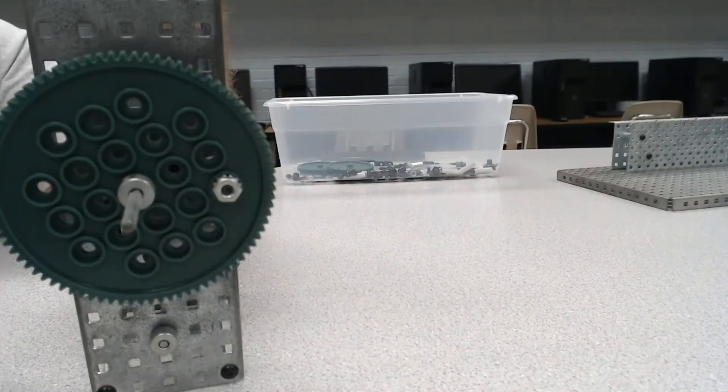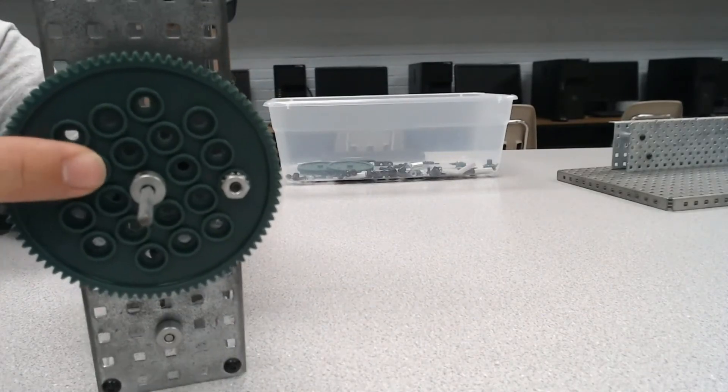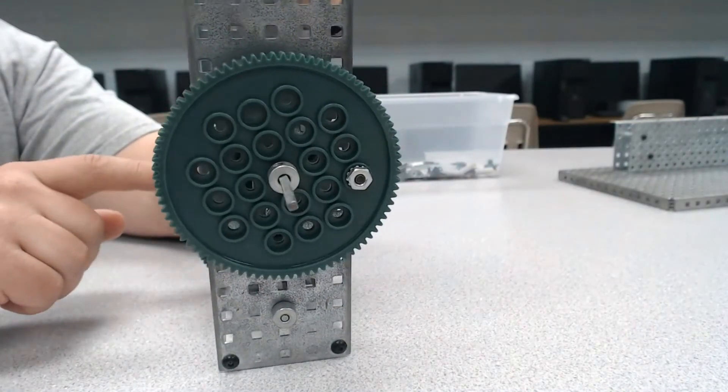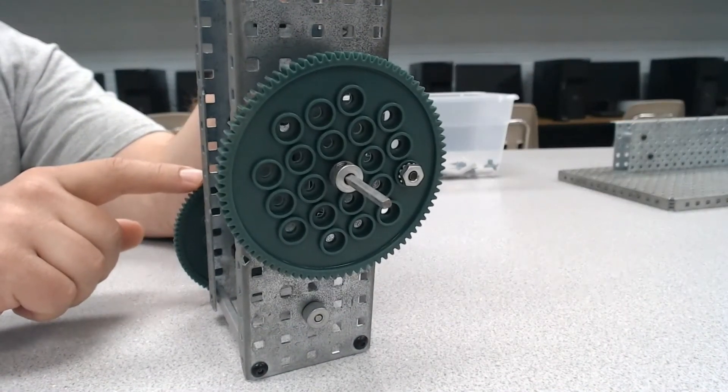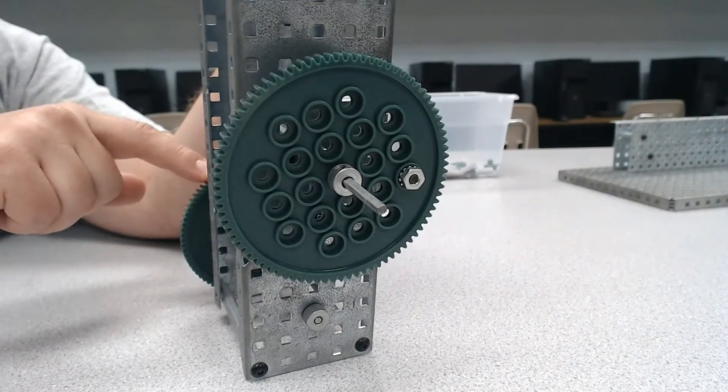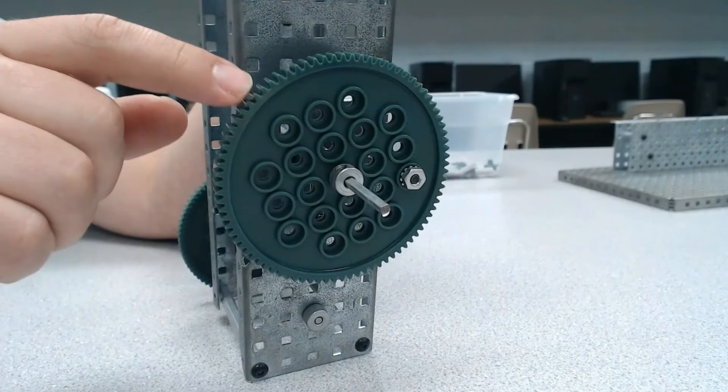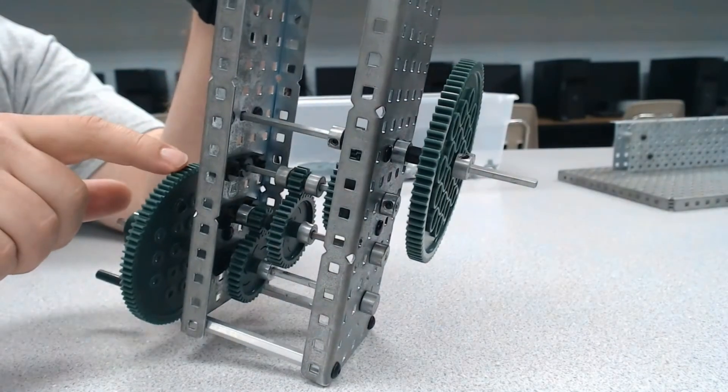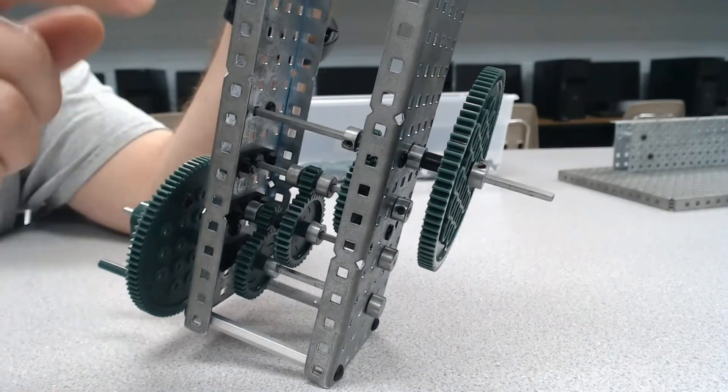But we're getting a lot of speed here at the output, which means the speed here is much slower. And since the speed here is slower, I have to put a lot more torque into turning this. And I get very little torque at the output. So that makes this one much harder to turn than that one.